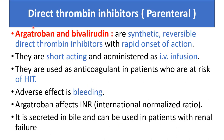Argatroban and bivalirudin are synthetic, reversible, direct thrombin inhibitors with a rapid onset of action. They are short-acting and administered by intravenous infusion. They are used as anticoagulants in patients who are at risk of heparin-induced thrombocytopenia.